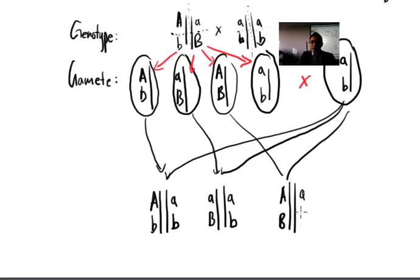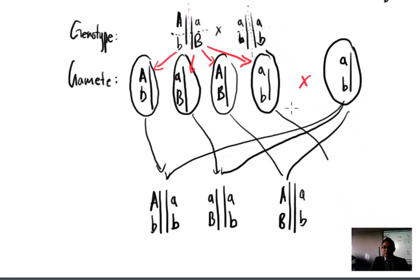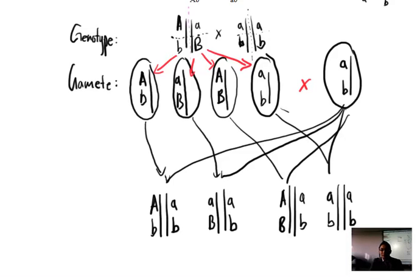And then finally this combined with this, I get a little a little b and a little a little b. So now we need to go back and take a look. So these are the four new possible kids.